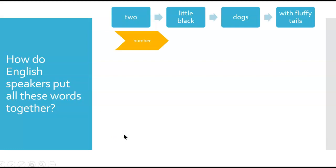The first one was two little black dogs with fluffy tails. We start with a number. Then we put the adjectives. There can be more than one adjective, little and black. Then there's the main noun. And finally, it's really common to put a preposition: with, on, to, over, of. So we call this a prepositional phrase.